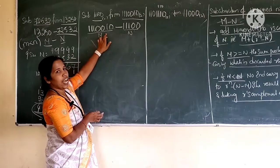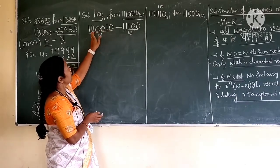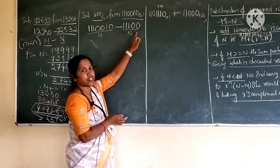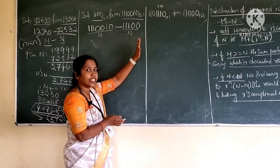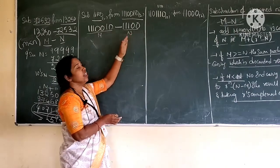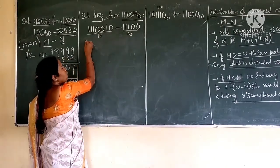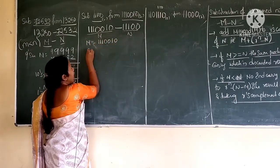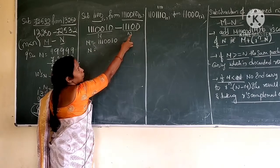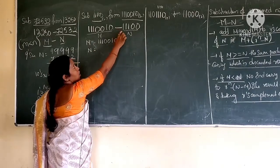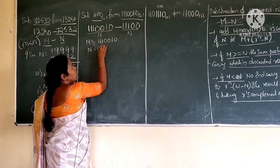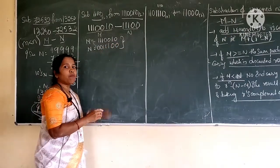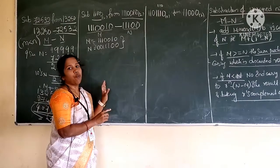Now when checking m: it has 6 bits — wait, 1, 2, 3, 4, 5, 6 — checking again: 1, 2, 3, 4, 5, 6, 7 bits. When coming to n there are only 5 bits. Then in that case you should add zeros to the left side of n. So m is equal to 1110010, and n must be padded to 7 bits by adding two zeros on the left.